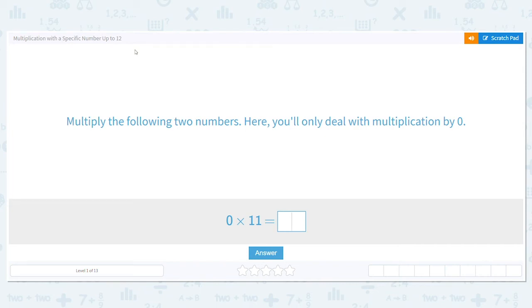Alright, let's practice multiplication with specific numbers up to 12. So it says here, multiply the following two numbers. Here you're only going to deal with multiplication by zero. Okay, so multiplying by zero, do you know what the rule is for zero? That means that any number times zero will always and forever equal zero.